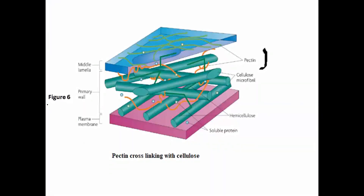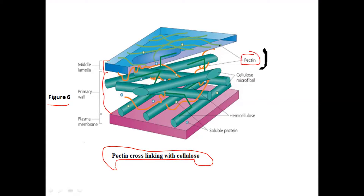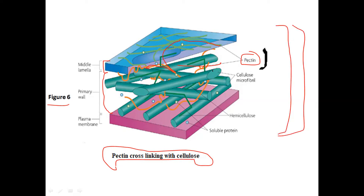In Figure 6, the pectin cross-linking with cellulose is shown. We already know that pectin is present in the middle lamella and primary wall of the cell wall. This is the pectin molecule shown in green color. You can see here it cross-links with cellulose and also with hemicellulose, resulting in the mechanical strength of the cell wall.